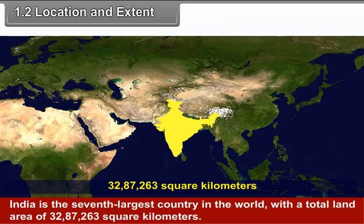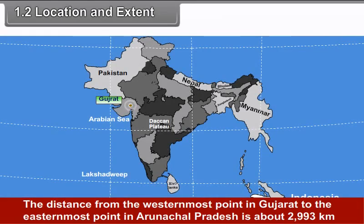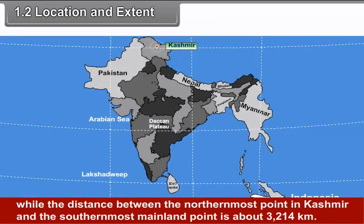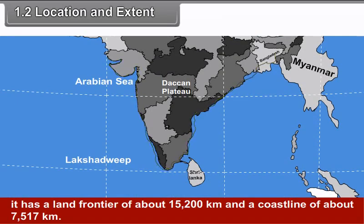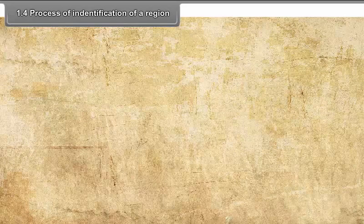India is the 7th largest country in the world with a total land area of 32,87,263 km². The distance from the westernmost point in Gujarat to the easternmost point in Arunachal Pradesh is about 2,993 km, while the distance between the northernmost point in Kashmir and the southernmost mainland point is about 3,214 km. It has a land frontier of about 15,200 km and a coastline of about 7,517 km.